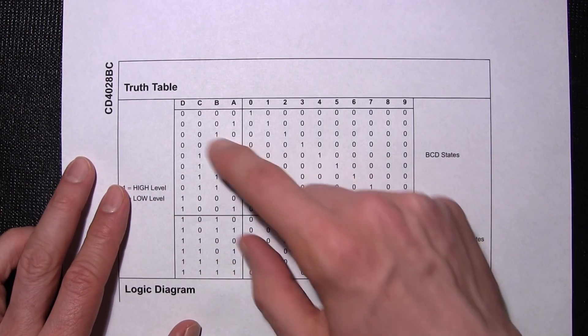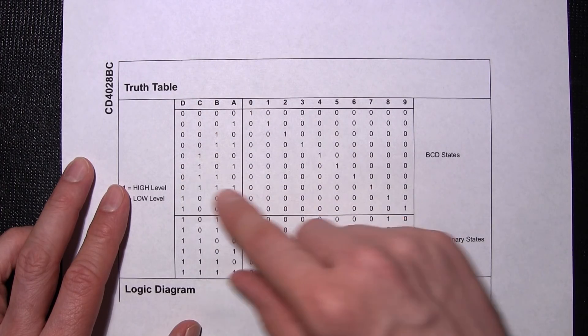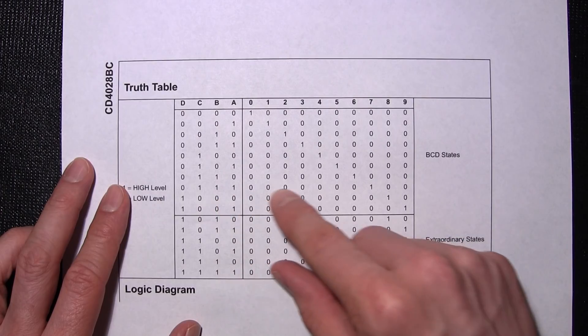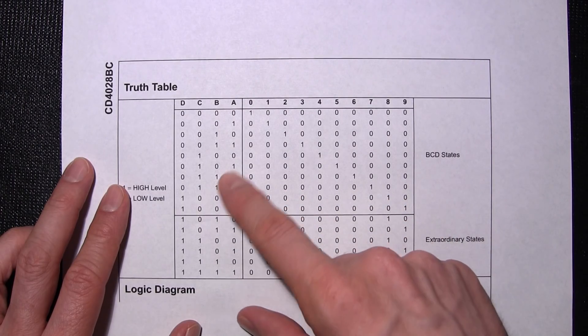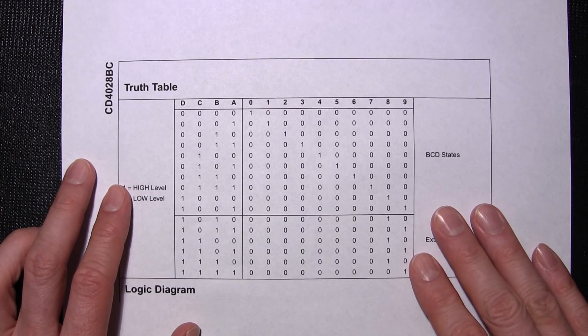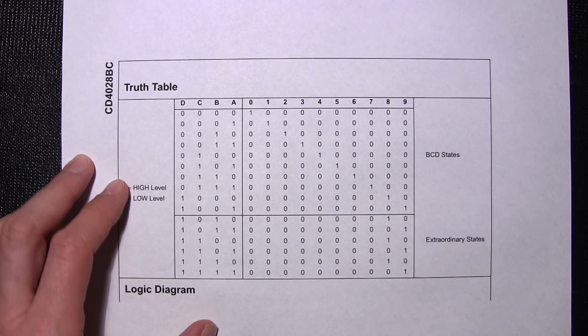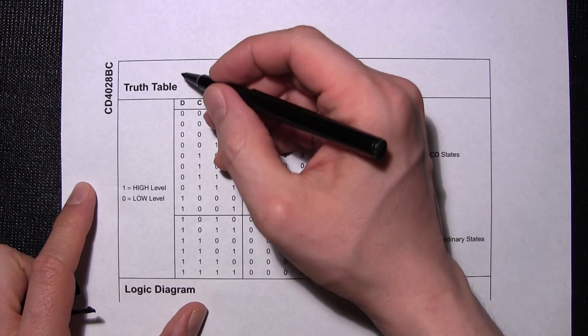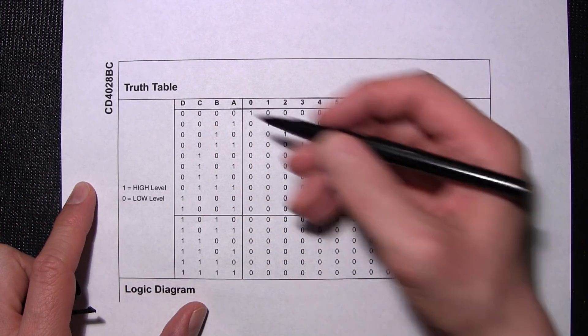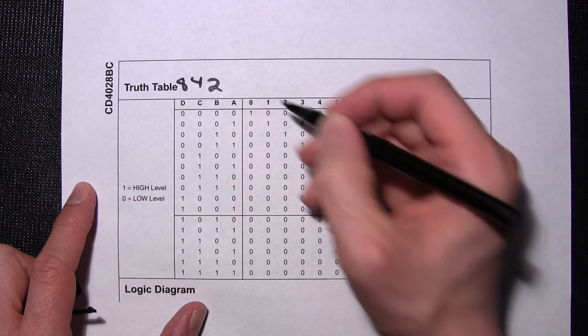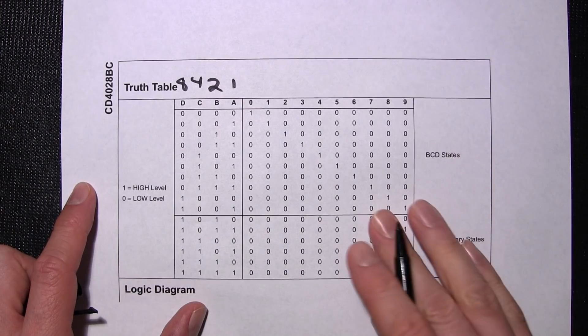So, now you're saying to yourself, how does D, C, B and A work out to this, like 0, 1, 1, 0, how does that equal this, or how does anything work on this chart? Well it's because they haven't included the most important stuff, the most crucial information. These are numbers. D is 8, C is 4, B is 2, and A is 1.